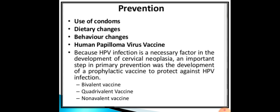Management includes prevention and treatment. Prevention involves use of condoms, dietary changes, supplementation with vitamins A, B, C, D, and E, behavioral changes such as delaying sexual activity until the cervical epithelium in the transformation zone has attained physiological maturity, limiting the number of sexual partners, and limiting the number of children.